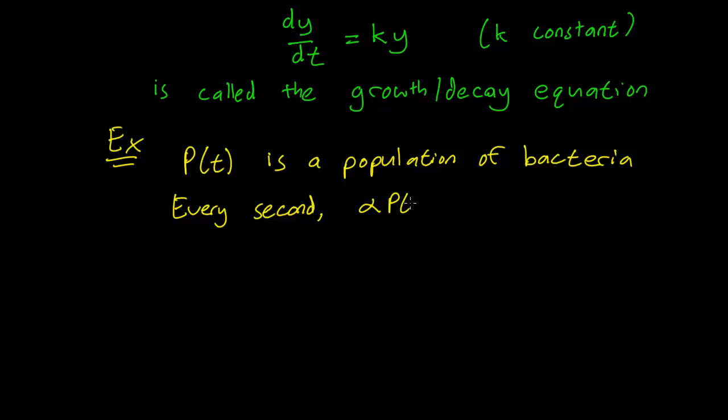alpha P(t) new bacteria are born, where alpha is some constant. So alpha could be, say, 10%, so that every second, the number of bacteria grows by 10%.